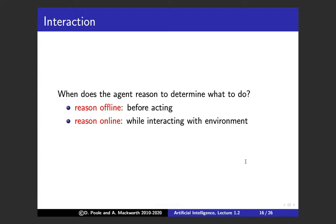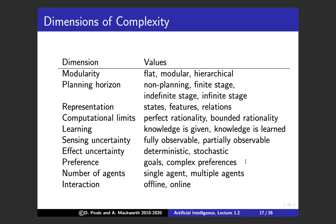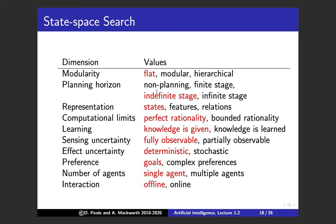The last dimension is the interaction dimension — whether the agent reasons offline before acting, or online while interacting with the environment. To summarize all dimensions: modularity, planning horizon, representation, computational limits, learning, sensing uncertainty, effect uncertainty, preferences, number of agents, and online versus offline. The very first topic we'll cover is state space search: flat, indefinite stages, state-based representation, perfect rationality, given knowledge, fully observable, deterministic effects, achievement goals, single agent, and offline.